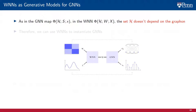In this GNN, the coefficient set H does not depend on the graph G. Likewise, consider a graphon signal X on the graphon W. The WNN map Phi applied to this graphon signal and parametrized by the coefficient set H and the graphon W does not depend on the graphon either. Therefore, GNNs and WNNs can share their learnable coefficients H, as shown in the diagram on the slide, meaning that we can use WNNs to instantiate GNNs.